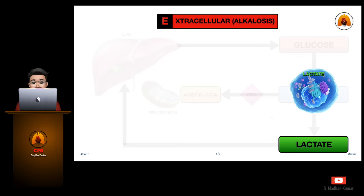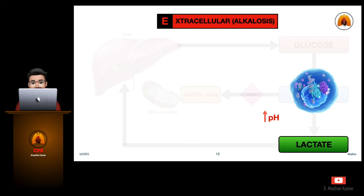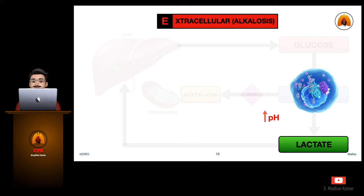Lactate moves in and out of cells via a pH-dependent transport mechanism. In the context of alkalemia, resulting in an elevated pH, lactate moves out of cells into the extracellular fluid. Lactate efflux increases during alkalemia, and stimulation of phosphofructokinase under these conditions also accelerates glycolysis, resulting in increased lactate production.